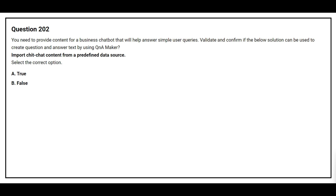Question 202: You need to provide content for a business chatbot that will help answer simple user queries. Validate and confirm if the following solution can be used to create question and answer text by using QnA Maker: import chit-chat content from a predefined data source. Option A: True. Option B: False. The correct answer is Option A, True.